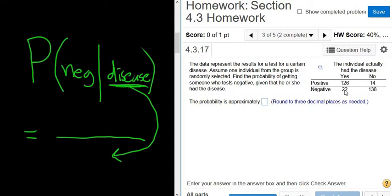So 126 plus 22, you add them up, right, is 148. So 148 people had the disease. So from these people, we want to figure out how many tested negative. So from these, there's 22 negatives. So 22 over 148.